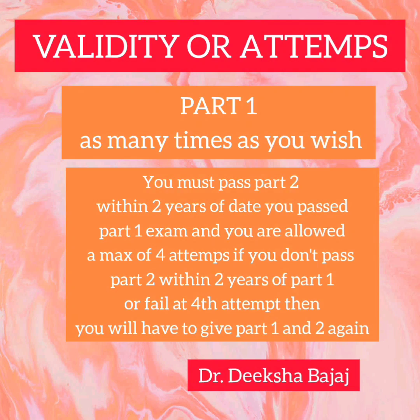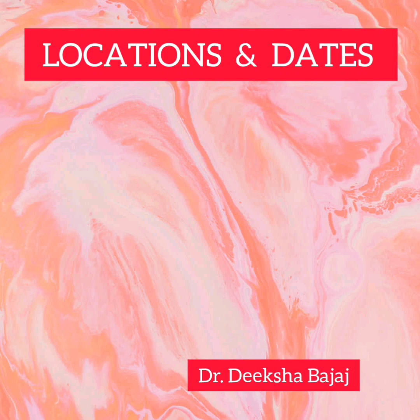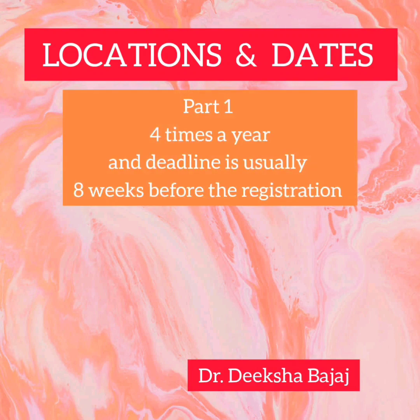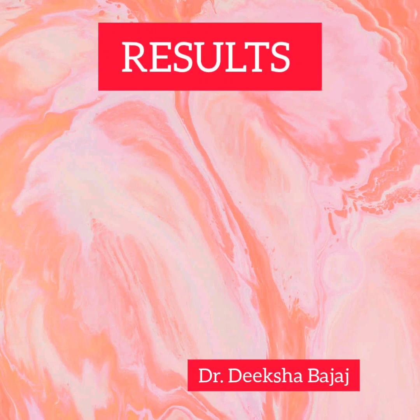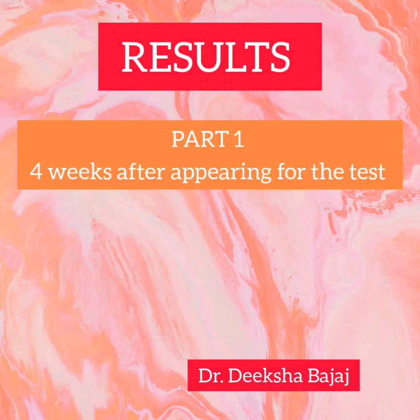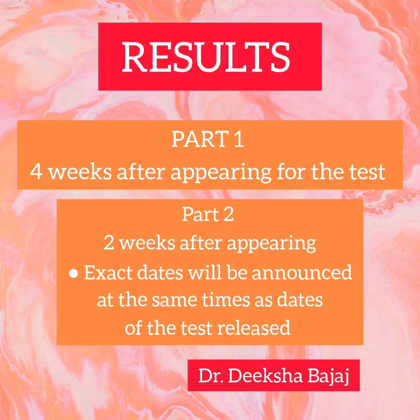Next is location and dates. It is usually difficult to get dates for the exam. For Part one, it occurs four times a year and the deadline is usually eight weeks before registration. For Part two, you can only give the exam in the UK. For results: Part one is declared four weeks after appearing for the test, and Part two is usually declared two weeks after appearing. The exact dates will be announced at the same time as the test dates are released.